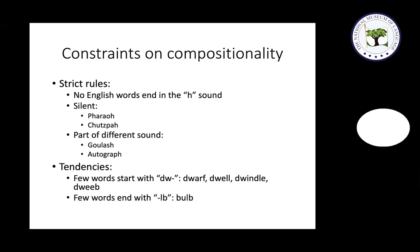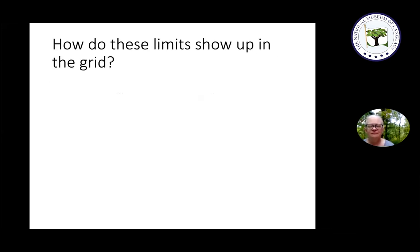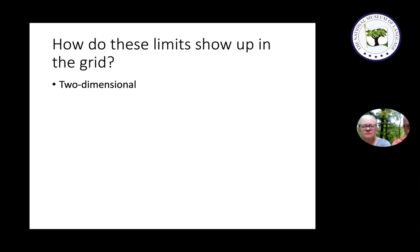There are indeed all sorts of constraints on how letters can get put together. Some strict rules have no exceptions — for instance, in English no words end with the 'h' sound. There are some words that end with the letter 'h,' but it's never pronounced as the 'h' sound; it's either silent, as in 'pharaoh' and 'chutzpah,' or it's part of a different sound, such as in 'goulash' or 'autograph.' There are also very strong statistical tendencies with a few exceptions — for instance, very few English words start with 'dw,' but there are some: dwarf, dwell, dwindle, and dweeb.